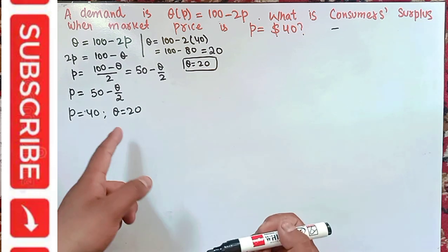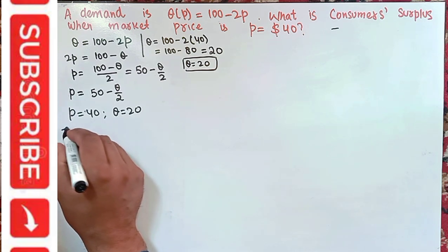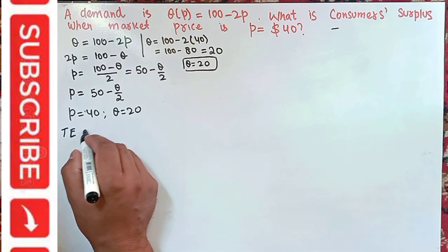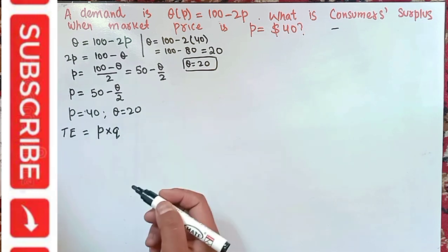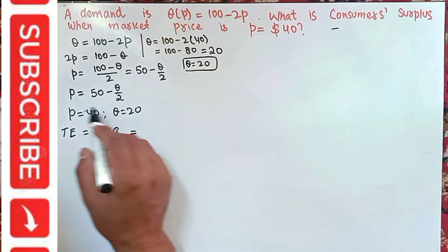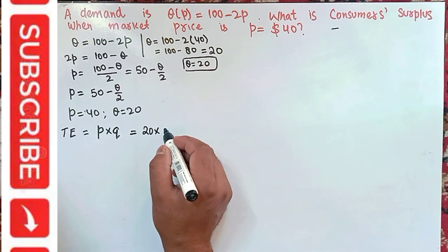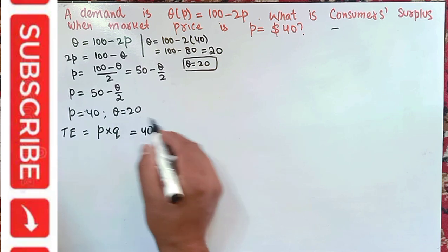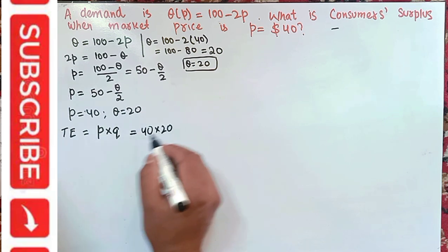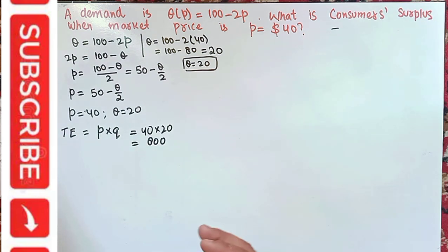Now we find the total expenditure by the consumer, which equals price times quantity. Here, price is 40 and quantity is 20, so total expenditure equals 40 times 20, which is 800.